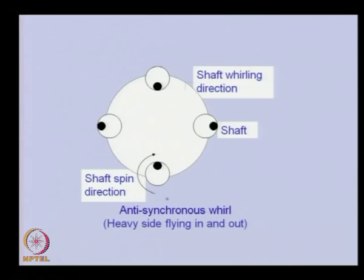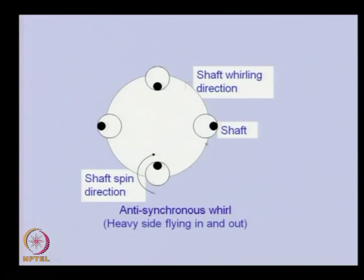There is another kind of whirl called anti-synchronous whirl, where the spinning and whirling directions of the shaft are different. In this case, the shaft rotates in the clockwise direction while the whirling direction is counter-clockwise. In this particular case, the heavy side will be coming in and out at every 90 degrees.